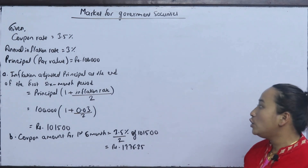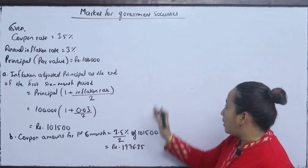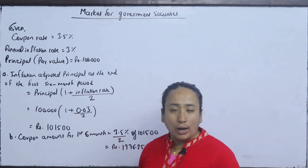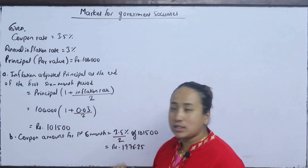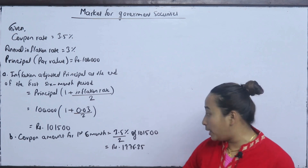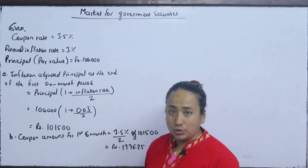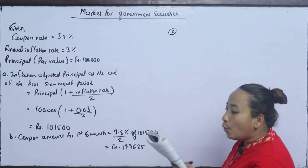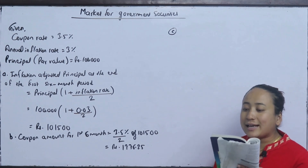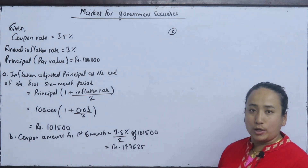Now, considering the principal change: the principal starts at 1,00,000, and after 6 months it becomes 1,01,500. For the next 6 months, what will be the inflation-adjusted principal at the end of the second six-month period?